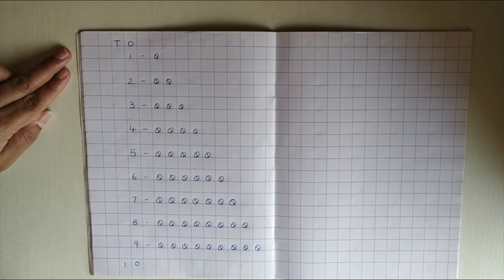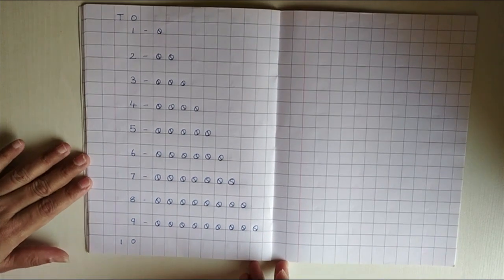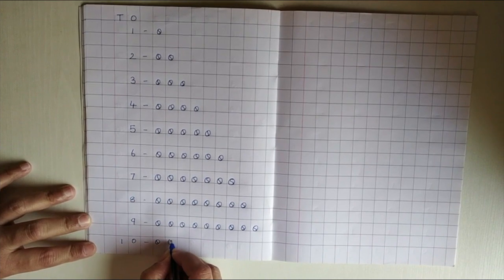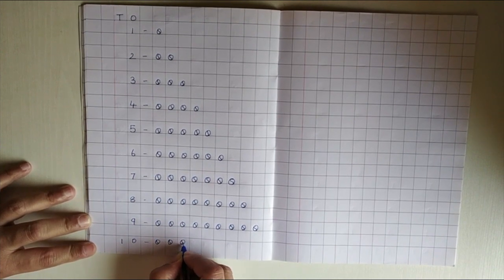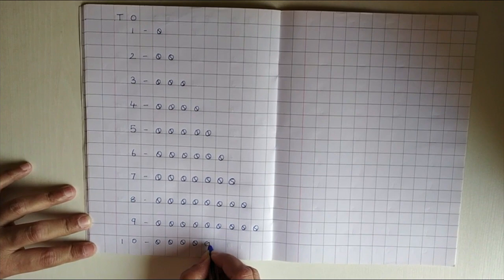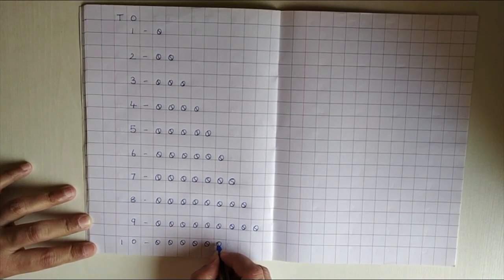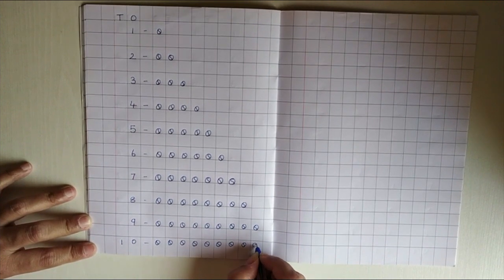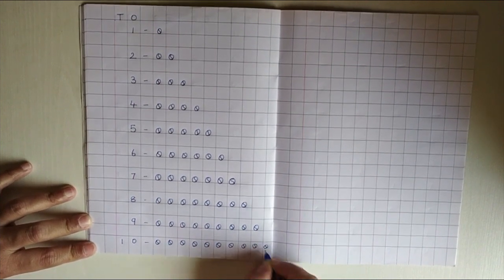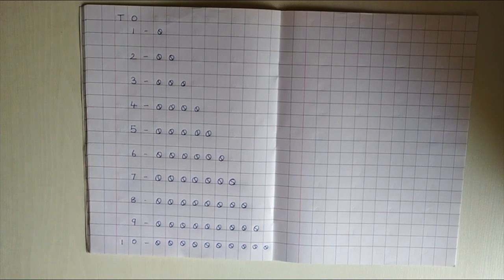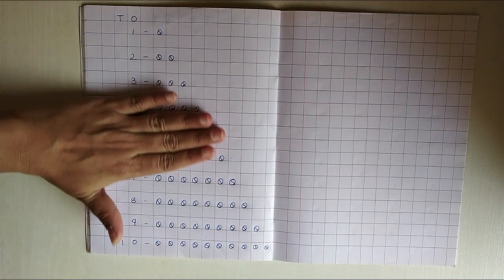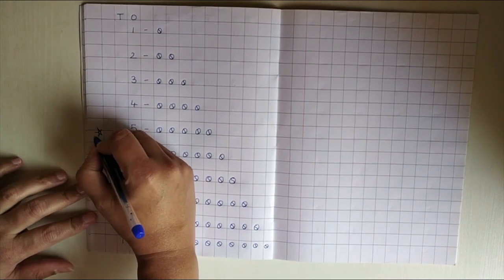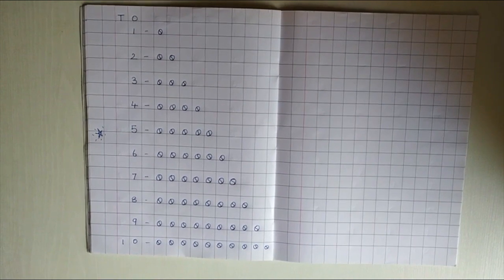Now, the last number is 10. So, 1, 2, 3, 4, 5, 6, 7, 8, 9, 10. Is my page looking neat, children? Is my page looking very neat? So, I am going to give a shining star.